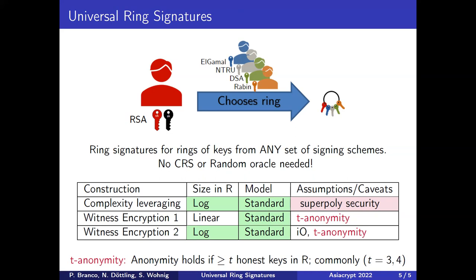Another caveat is that we only get anonymity if we have a certain threshold of honest keys in our ring. Normally this would be two for standard anonymity, but in our case we need three or four honest keys. For more details on our constructions, please come to our talk — I will be very pleased to see you there.